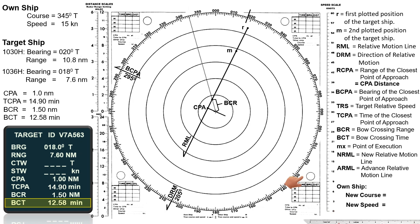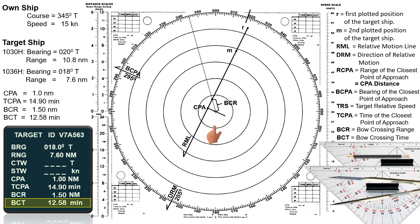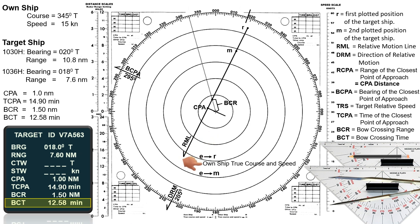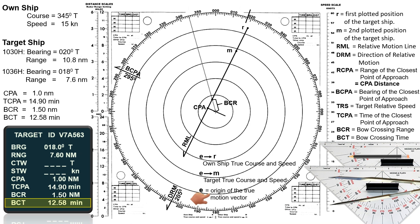Before we proceed, let's familiarize ourselves with the following symbols. E to R represents own ship's true course and speed. E to M represents the target's true course and speed. Remember that E is the origin of the true motion vector and can be found at the center of the plotting sheet.